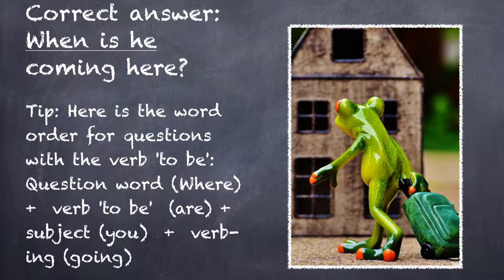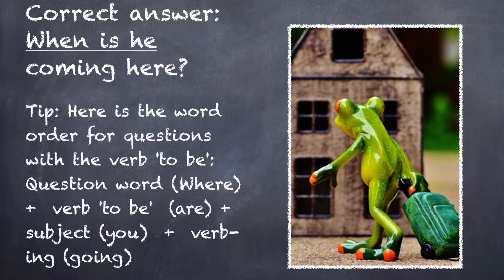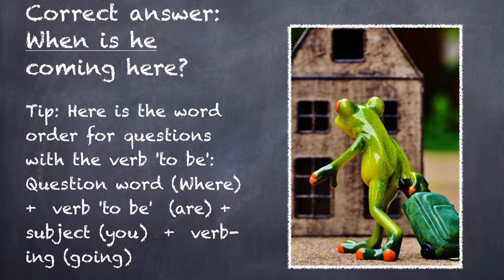The correct answer is: 'When is he coming here?' For this you just have to know the word order for questions with the verb 'to be,' and this is very important as it is a very common sentence structure. The pattern is: question word, then the verb 'to be,' then the subject, then the verb plus -ing. For example: 'When is he coming here?' 'Why are you crying?' 'When are they leaving?' And so on.